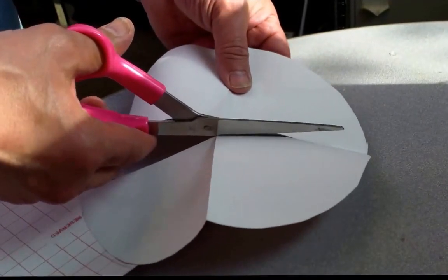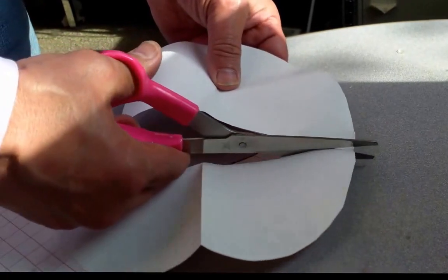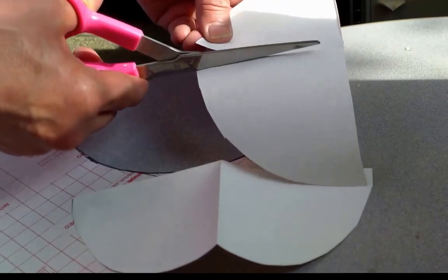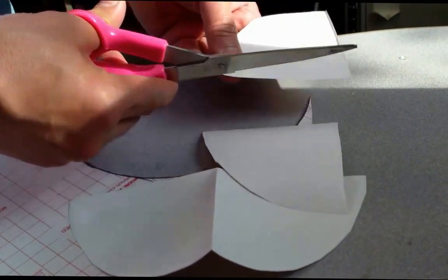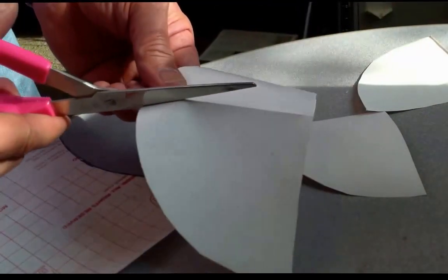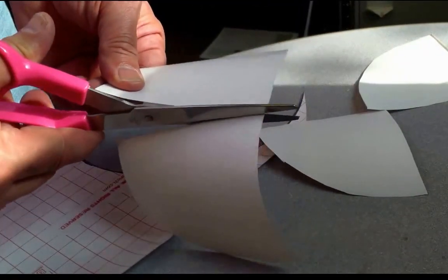You could do this with actual paint on the pan, or you could do it with duct tape, black and white, or whatever you want to do. So the idea is to get two quadrants of white and two quadrants of black on the bottom of the cake pan.